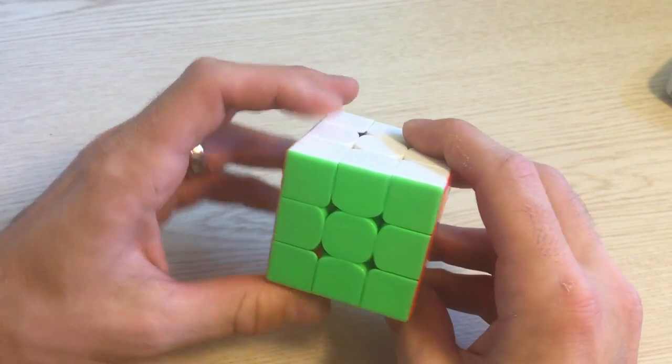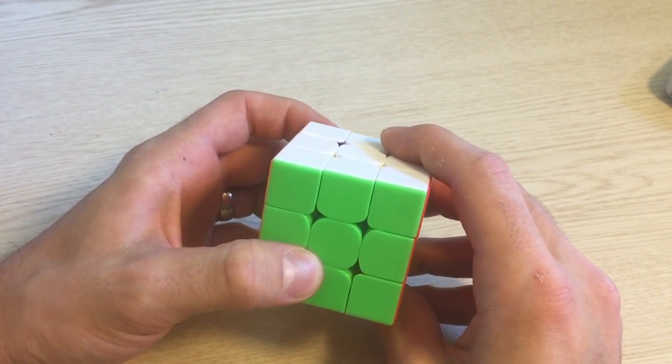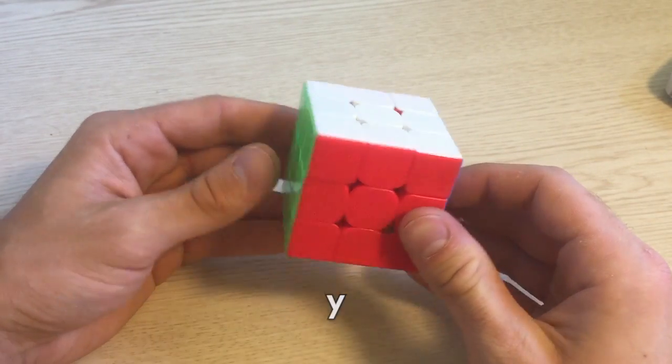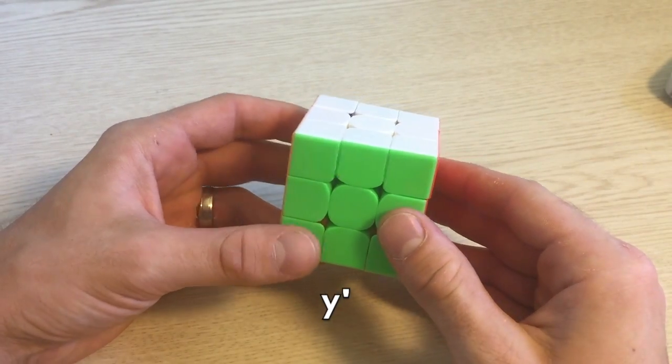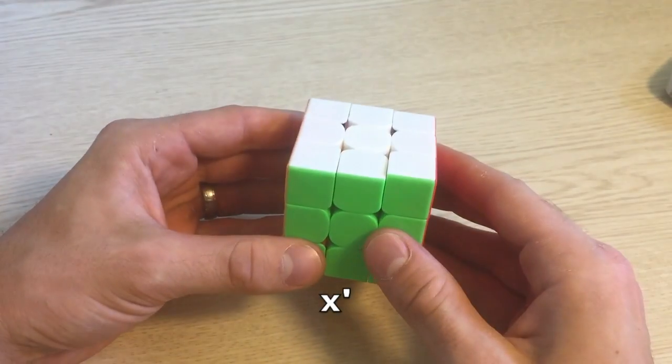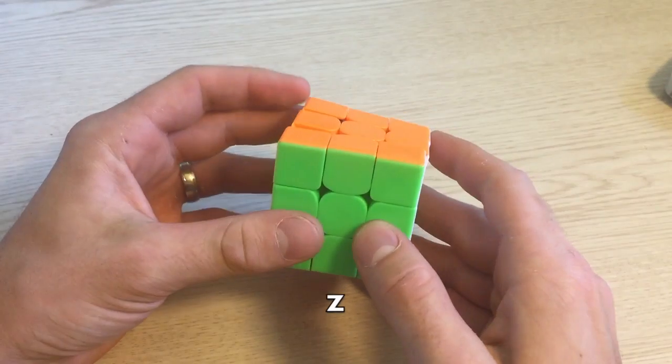These are noted with lowercase letters. You don't see this for scrambles, but for algorithms they do show up. Y shows up most often and copies the same rotation as the U face does. Y means the whole cube rotates 90 degrees clockwise. X copies the R side by moving the cube up or down, and Z spins the cube in the same direction the front face does.